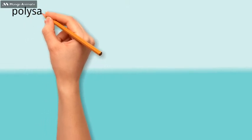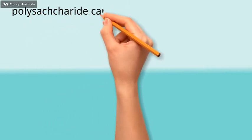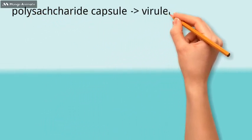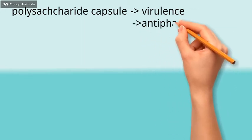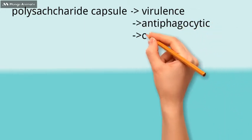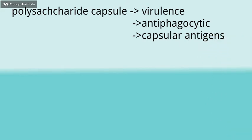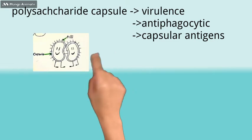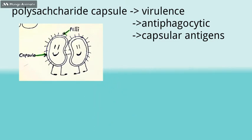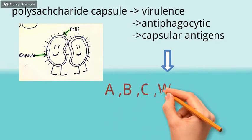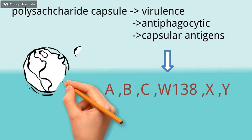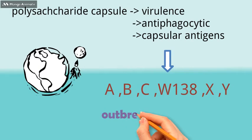They have a polysaccharide capsule. It acts as a virulence factor because it is antiphagocytic. There are capsular antigens present in this polysaccharide capsule. Serotypes of the meningitidis are determined by the type of antigen present in the polysaccharide capsule. Out of those, A, B, C, W-135, X and Y are commonly associated with outbreaks and epidemics.